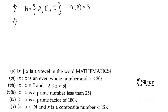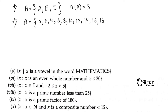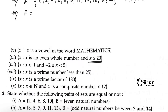Sum number 6: x is an even whole number, x less than or equal to 20. The even whole numbers are 0, 2, 4, 6, 8, 10, 12, 14, 16, 18, and 20 — because of the less than or equal to sign, 20 is included. There are a total of 11 numbers, so the cardinal number is 11 and it is definitely a finite set.